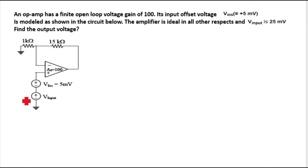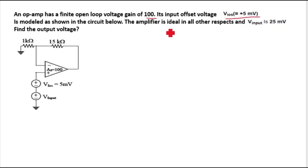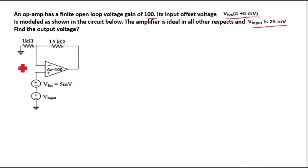The question is: an op-amp has a finite open loop voltage gain of 100. Its input offset voltage VIOS is plus 5 millivolt, modeled as shown in the circuit below. The amplifier is ideal in all other respects, and V input is 25 millivolt. Find the output voltage.